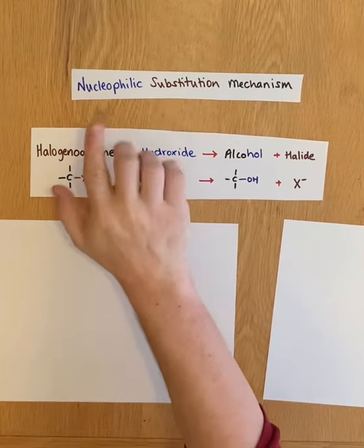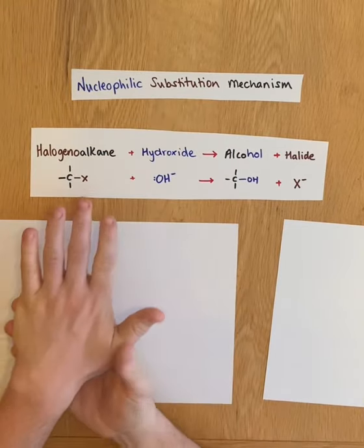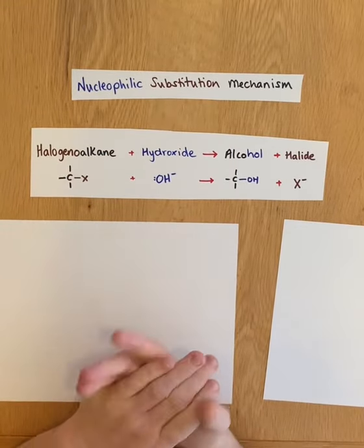Okay, in this video we're going to look at the mechanism for the nucleophilic substitution reaction between a halogenoalkane and hydroxide ions.